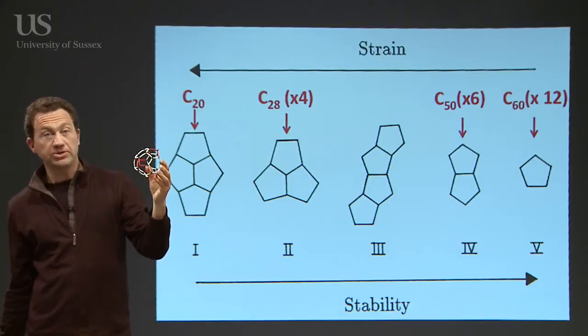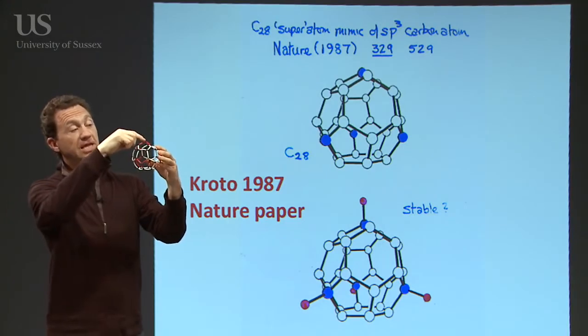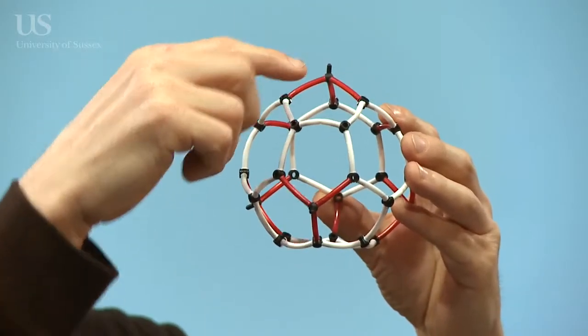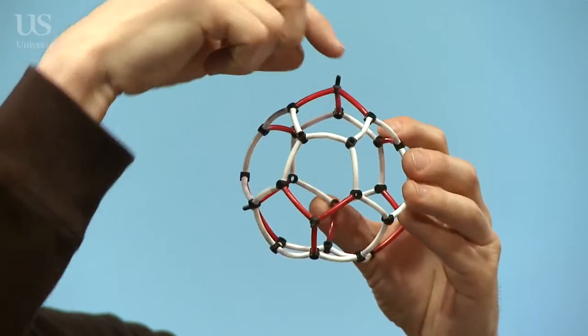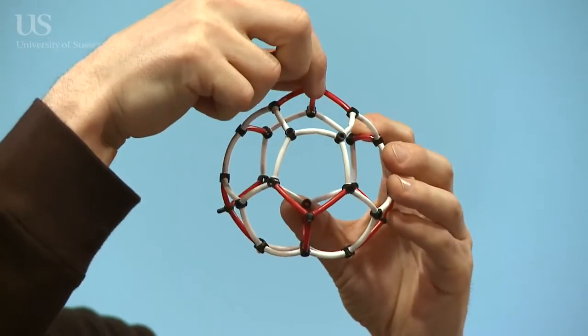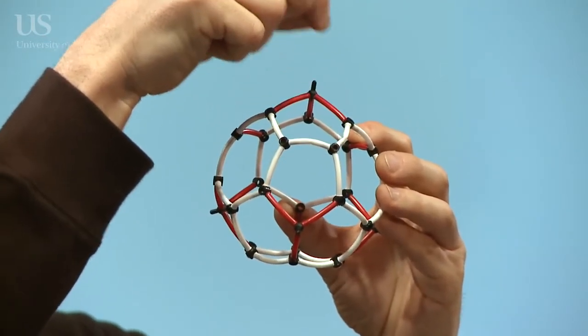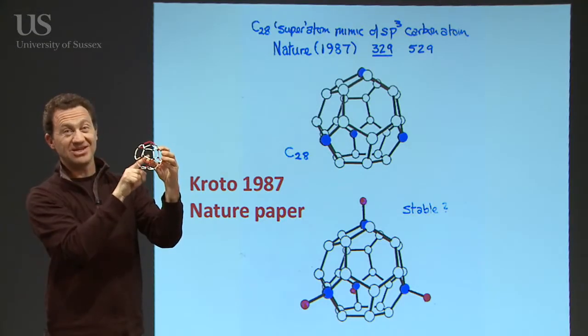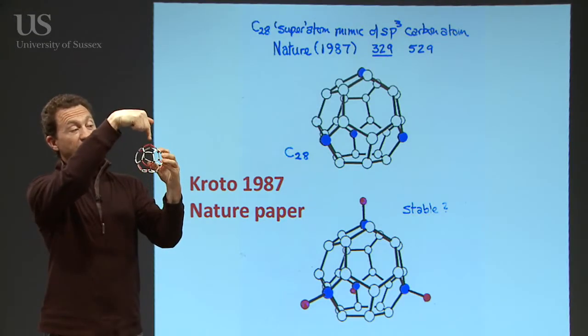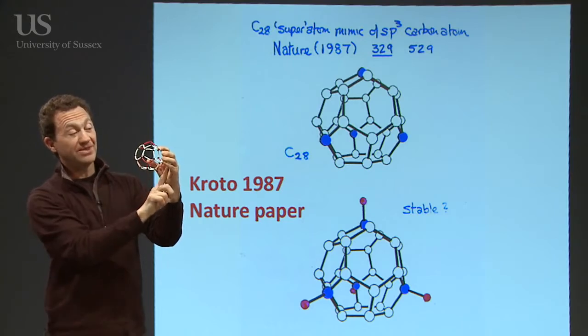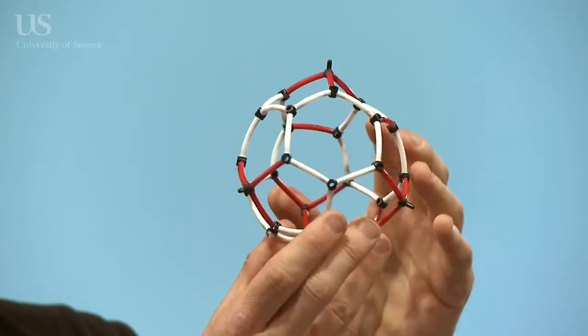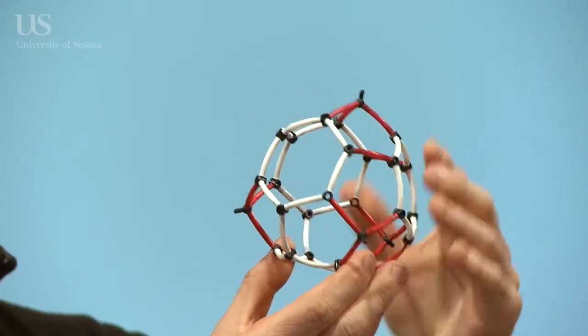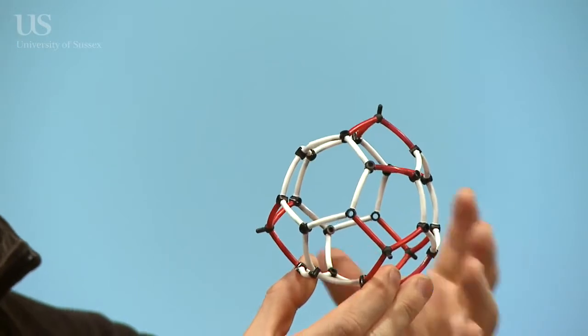However, what can happen possibly is that the thing may be able to be stabilized by adding atoms onto the cage. Where the three pentagons meet and you've got this instability, you might be able to take the strain away by adding a hydrogen atom. Because there's four sets of these three pentagons, if you have four hydrogen atoms on here, you get C28H4. It may be completely stable. The hydrogens may take the strain away from the system.